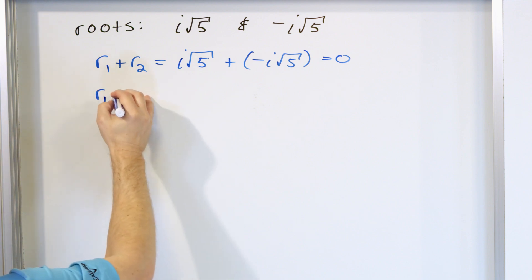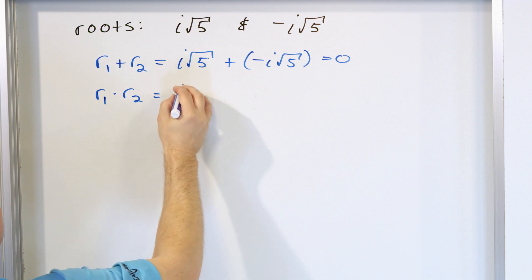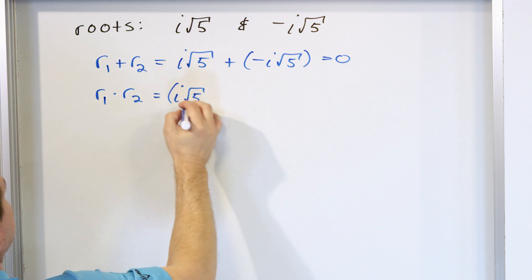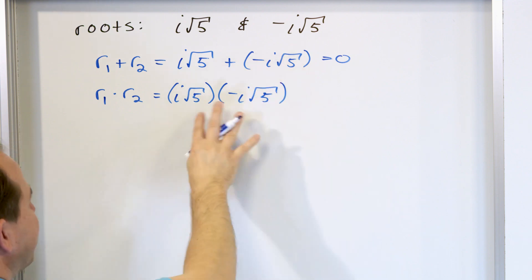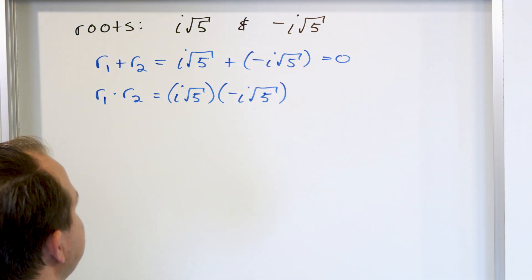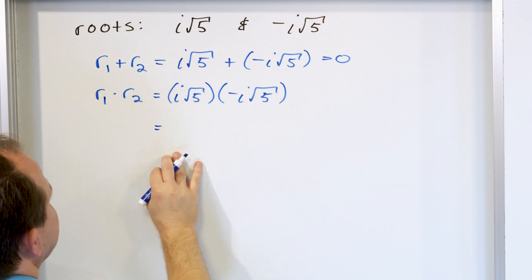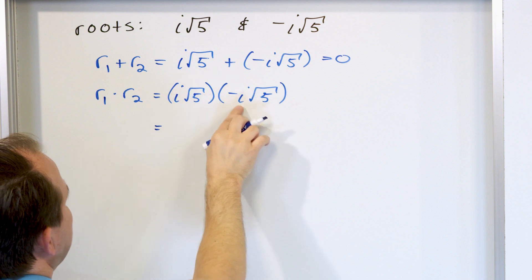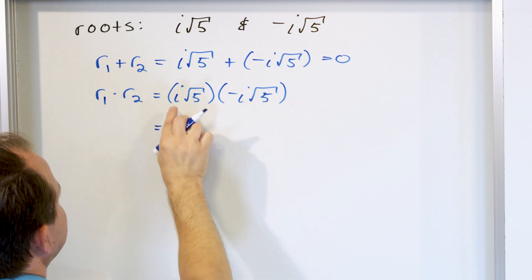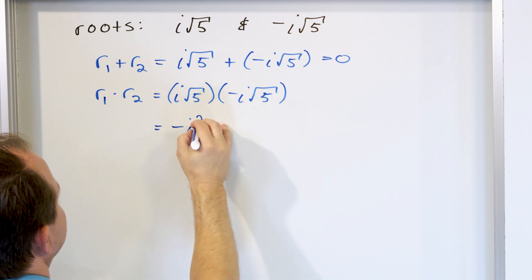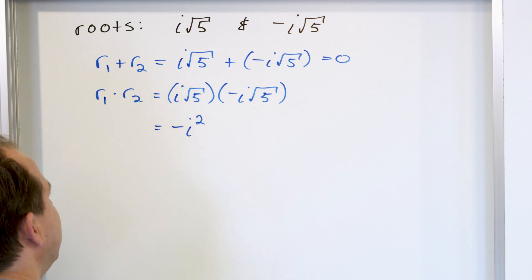To multiply the roots together is a little more involved. When you multiply r1 times r2, you're going to have i times the square root of 5, in parentheses, times negative i times the square root of 5. Here's how you have to be careful with imaginary numbers — they're not hard, you just have to be careful. The i times i is i squared. Don't do it too fast in your head — just write down that i times i is i squared.